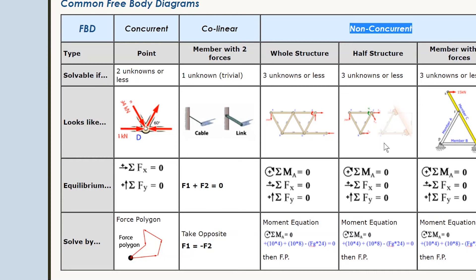We already have all the tools needed to solve a truss, a truss with a frame member, or a member with more than two forces. The tools are: force polygon when there are two unknowns, moment equation when there are three or more unknowns — hopefully bringing it to a single unknown — and then switching back to the force polygon to finish off.